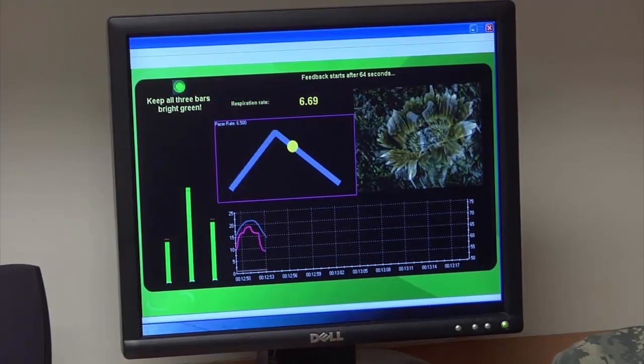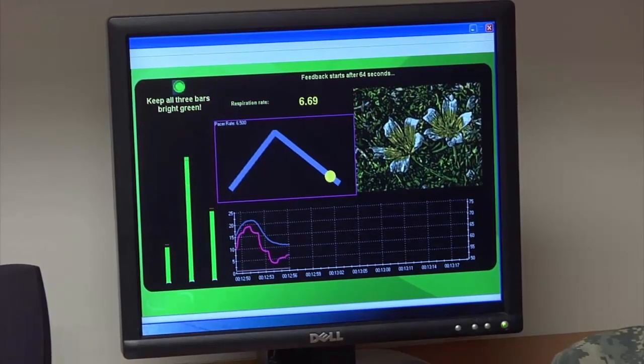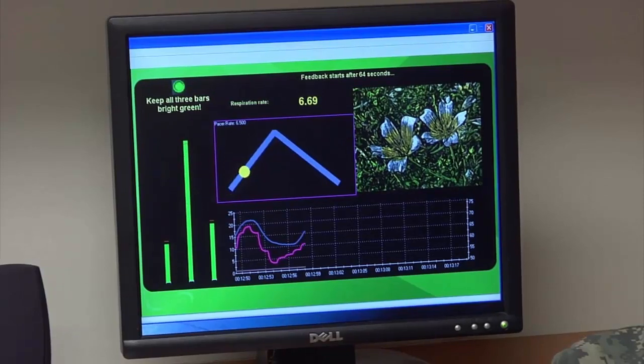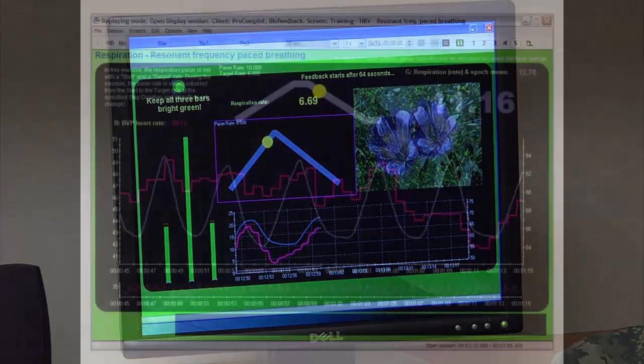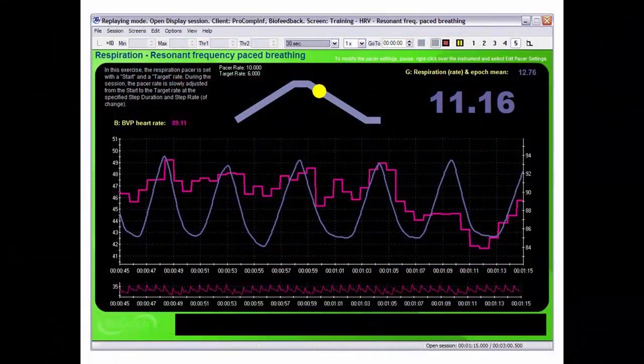The relatively smooth blue line represents respiration, whereas the pink jagged line represents heart rate variability. The respiration rate is at the top right side of the screen.